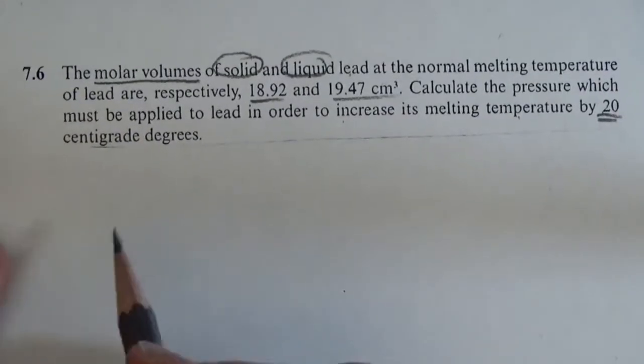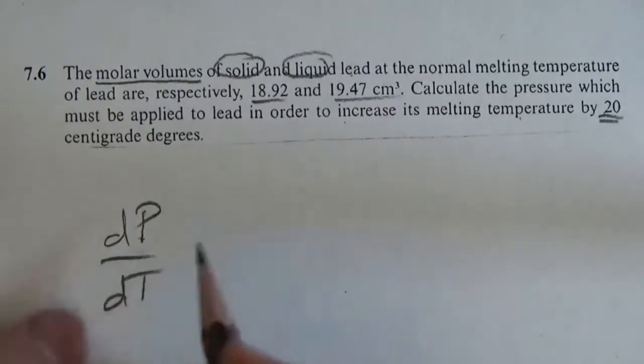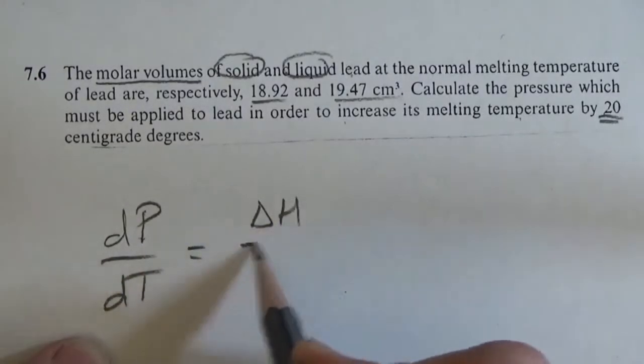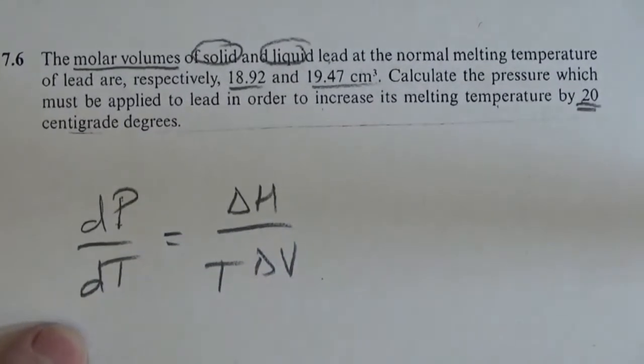So this is going to be a problem in which we say we need this dp by dT, which again comes back to Clausius-Clapeyron: delta H over T delta V.